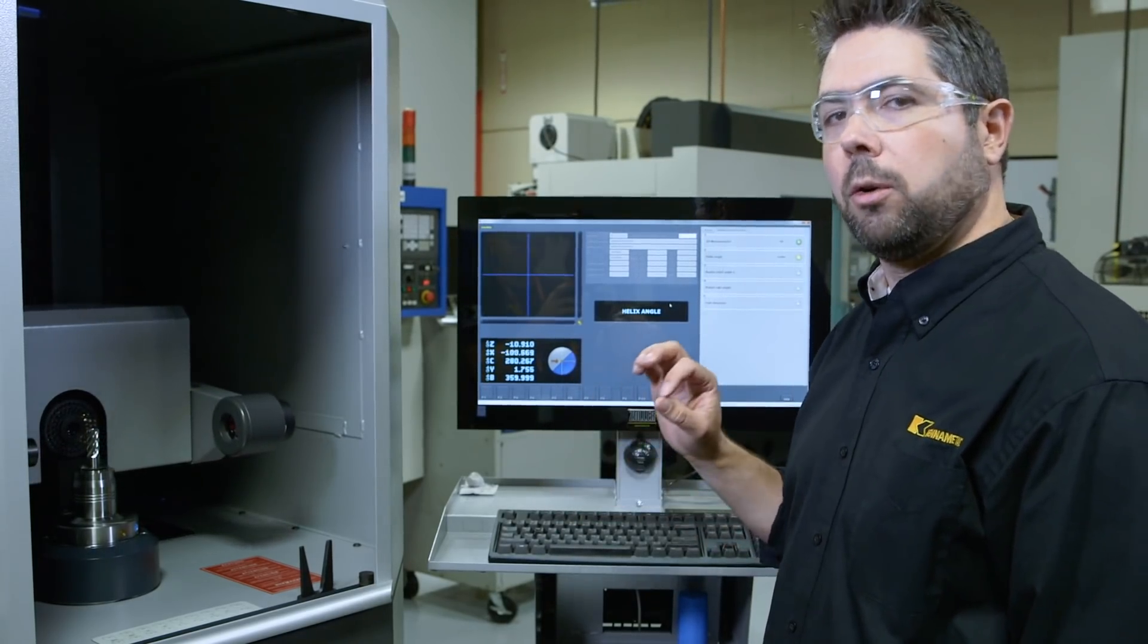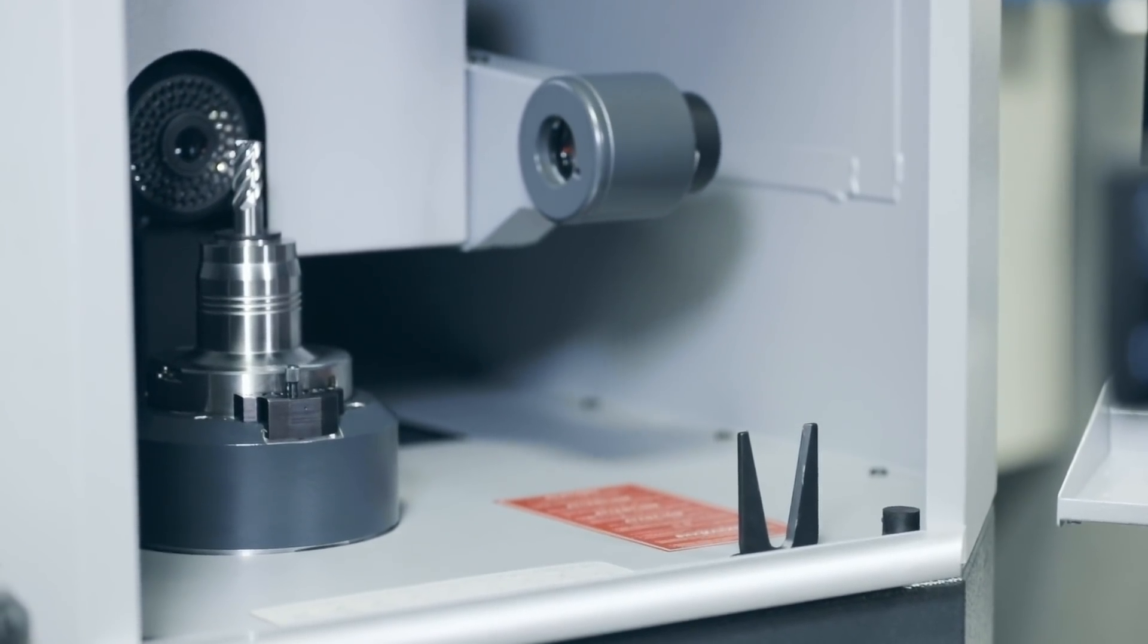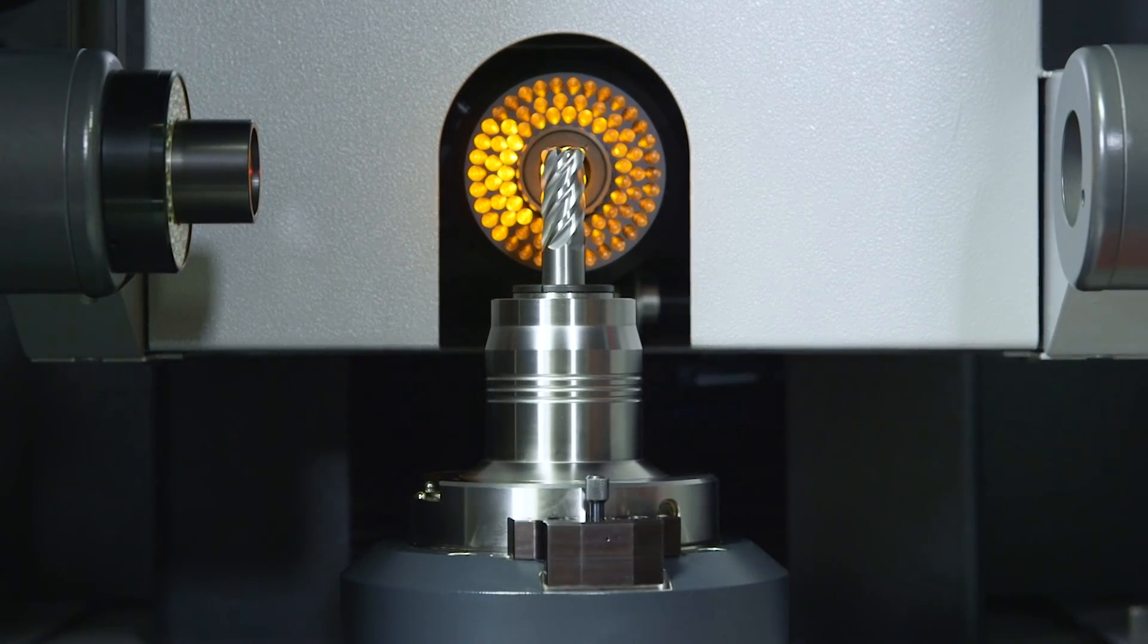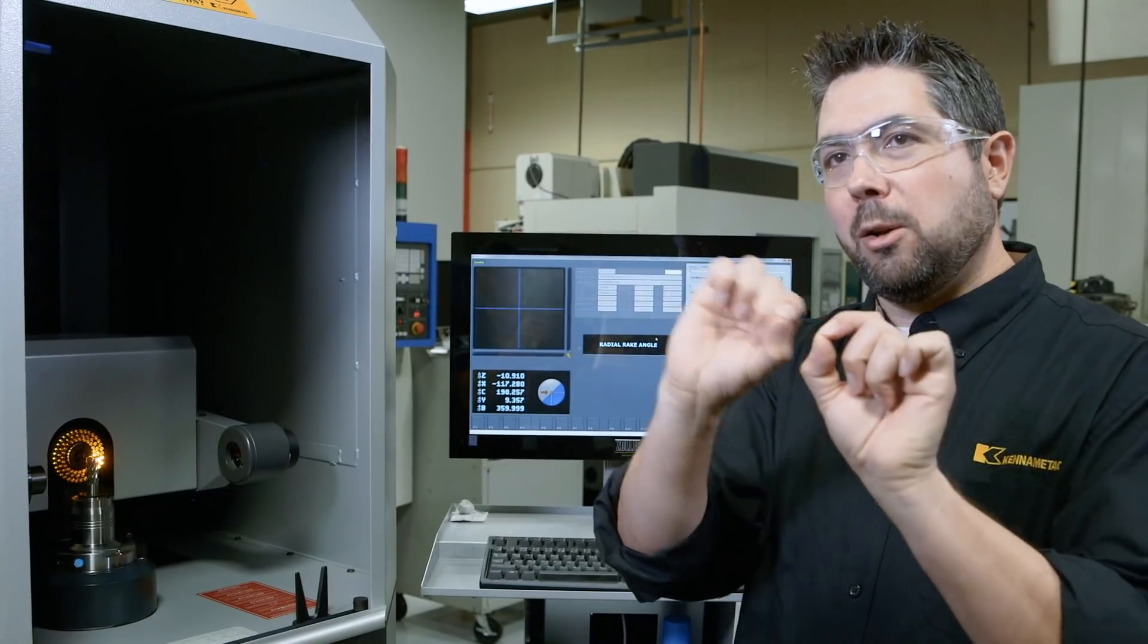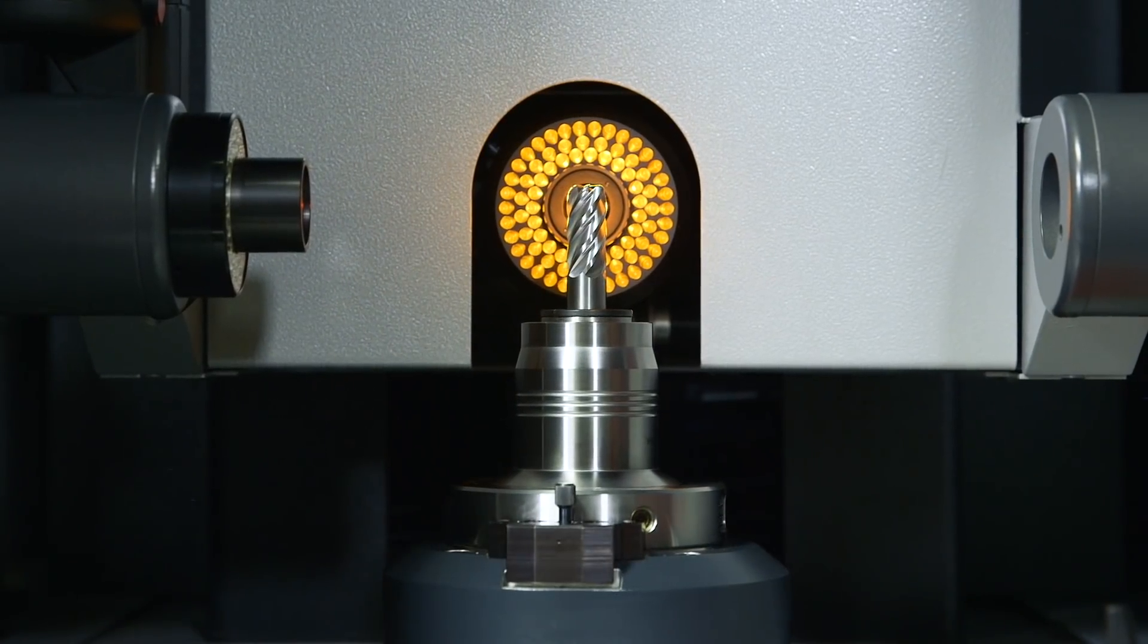We'll check helix angle, we'll check radial rake, check relief angle. What's really cool is how it does the lights. It's actually trying to create different reflections so that it can make it easy on the processor to pick up that edge and calculate it.